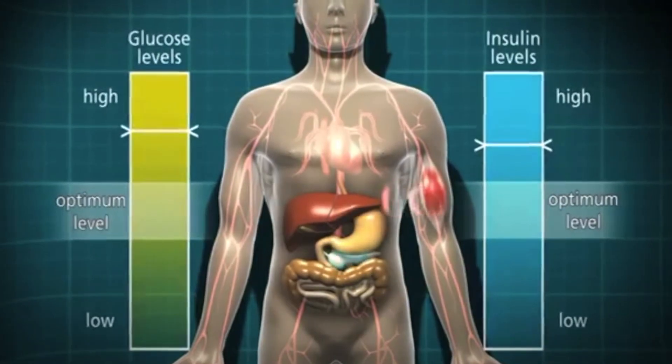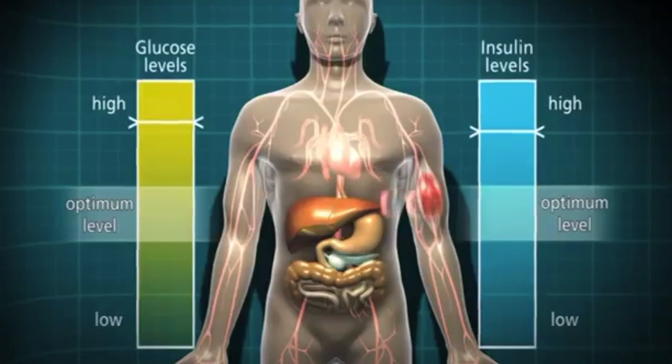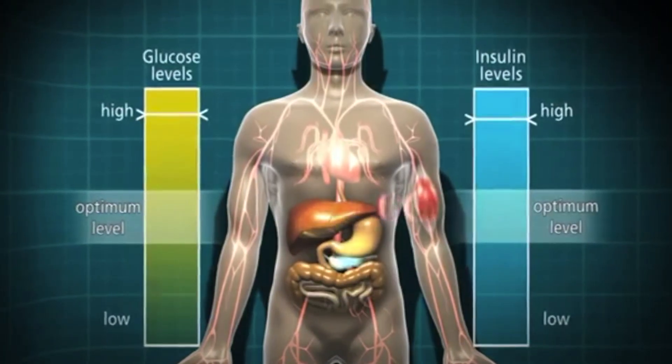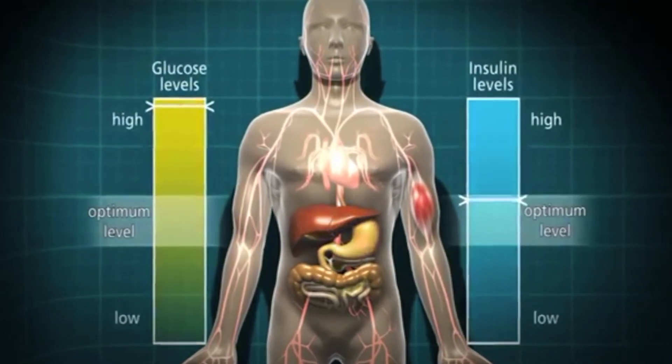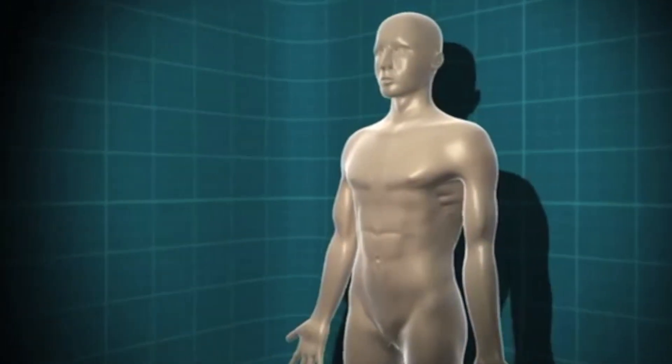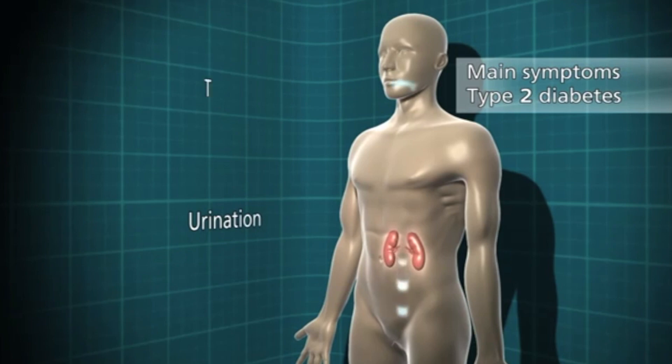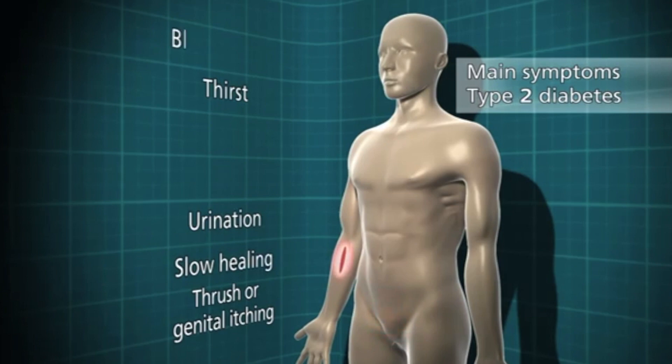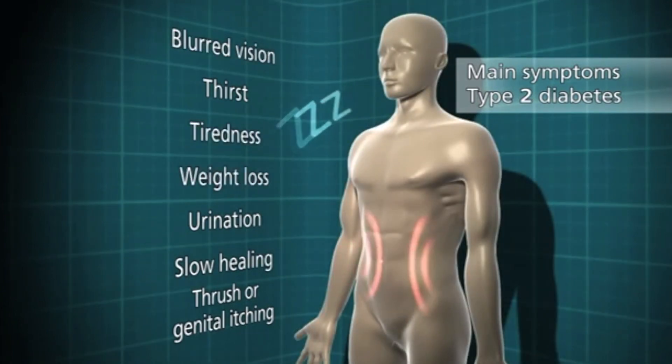Type 2 diabetes, where the body does not produce or use insulin well, is another example of a multifactorial disorder present in 1 in 10 individuals. Diabetes is a metabolic disease that causes high blood sugar. The hormone insulin moves sugar from the blood into your cells to be stored or used for energy, but with diabetes your body either doesn't make enough insulin or can't effectively use the insulin it does make. Symptoms include increased hunger and thirst, weight loss, frequent urination, blurry vision, extreme fatigue, and wounds that don't heal. Diabetes can eventually lead to strokes, heart disease, and organ failures. Doctors often advise lifestyle changes including a diet with fewer carbohydrates and an active lifestyle with exercise.